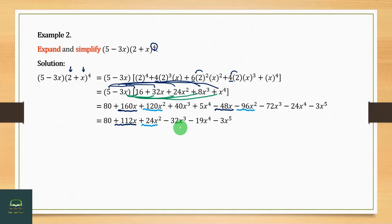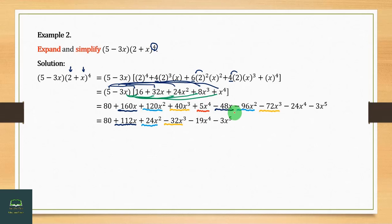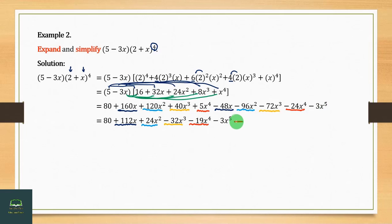Now we have 32. We have 32, 32, 32, 32. We will simplify 32. So let's see if we can see it.